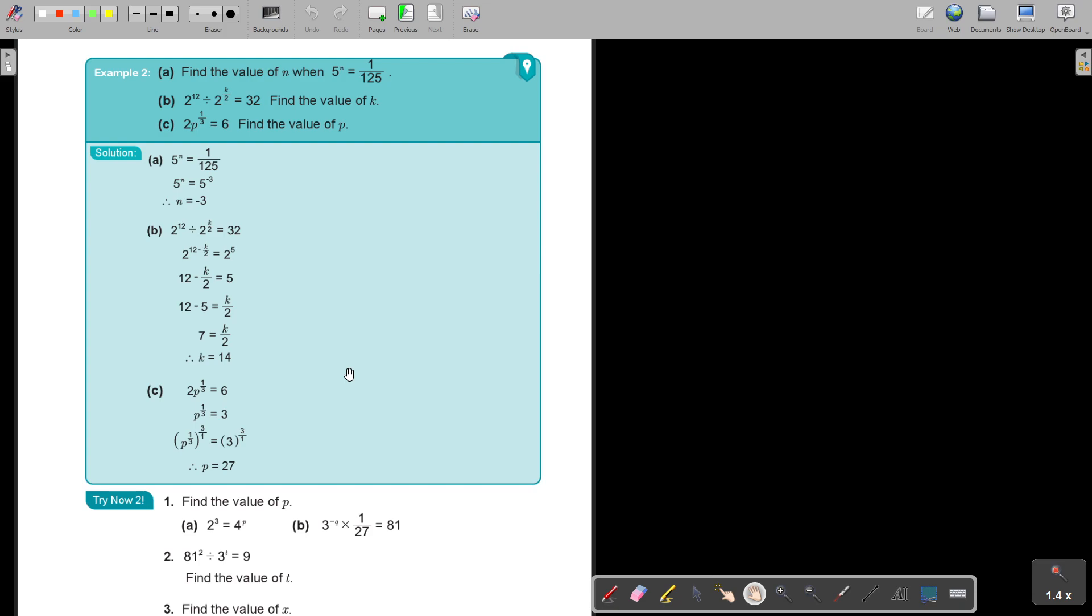Example 2. Find the value of n when 5 to the power of n equals 1 over 125. I'm first going to take that and make that prime factor. If it's 1 over 5 to the power of 3, then I'm taking it up and it's going to be 5 to the power of negative 3. If the bases are the same in an equation, I can equate the indices. So then n is equal to negative 3.